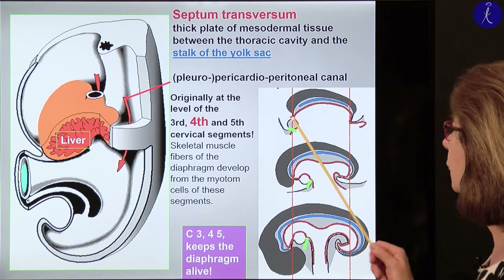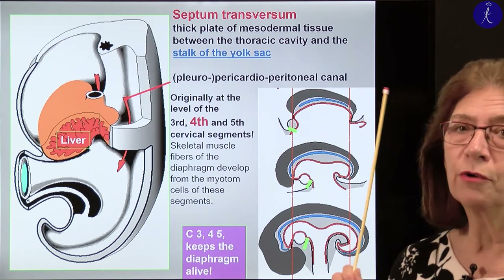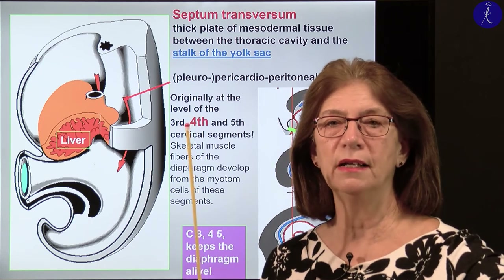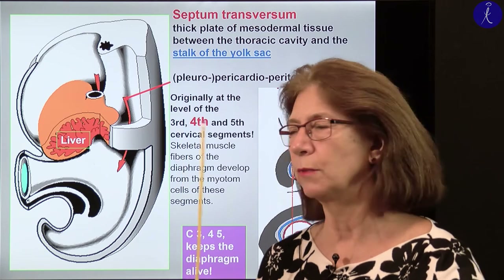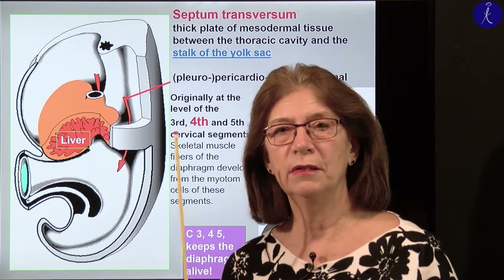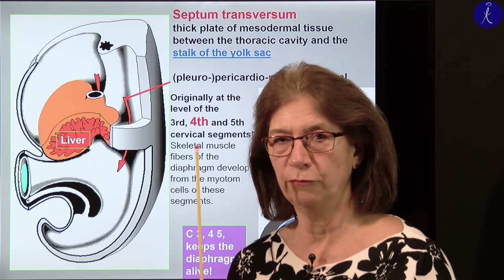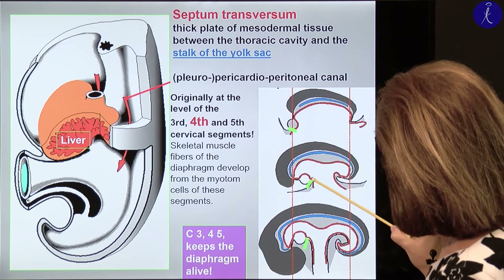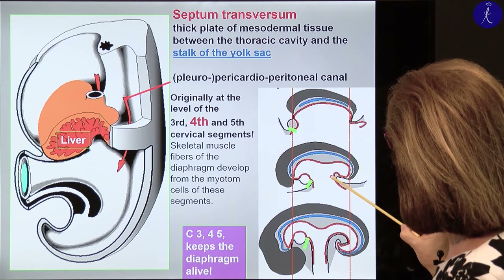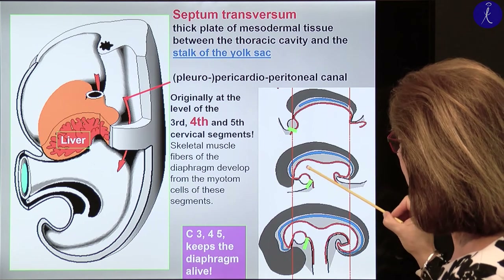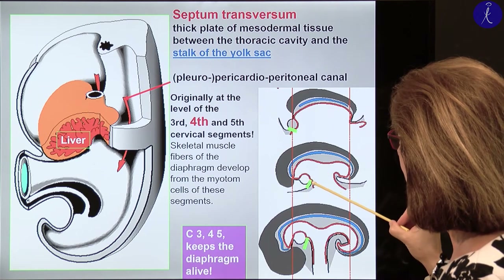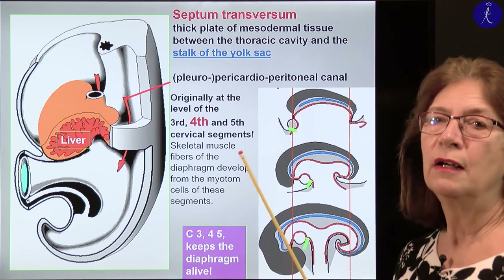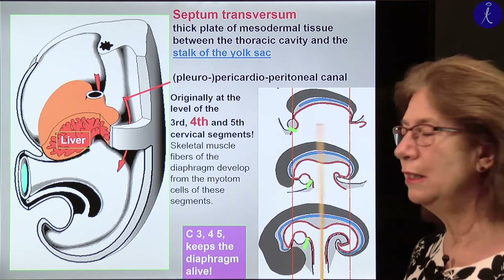Where does the septum transversum form? We have our diaphragm between the lungs and heart on one side and the liver and stomach on the other. The liver and stomach are parts of the foregut — the most distal part — and the diaphragm must be under the heart and above the liver. The liver forms as the last structure from the foregut. So the position of the septum transversum must be between the heart primordium and the liver primordium.